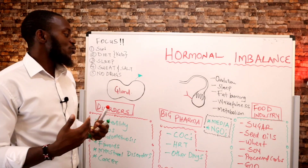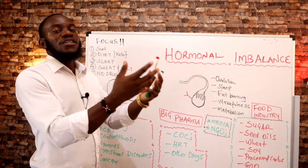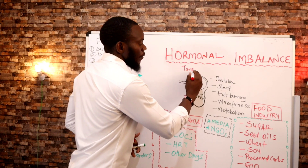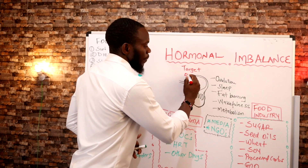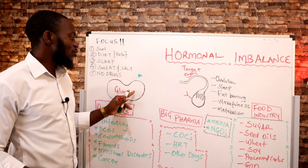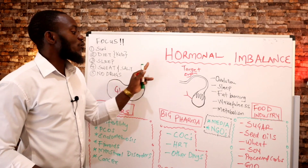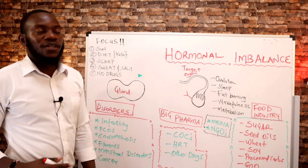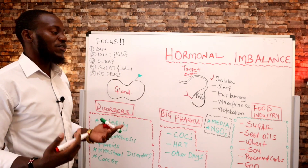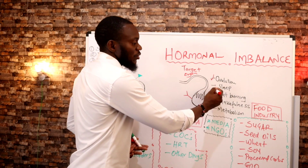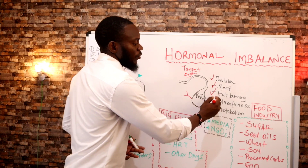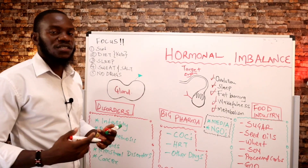This hormone is produced by the gland to communicate to a target organ. In this case, the target organ is the ovaries — we use the pituitary gland or the gonadotropins to communicate to the ovaries to aid in ovulation. Hormones regulate different functions: ovulation, sleep regulation, fat burning, metabolism, and wakefulness.